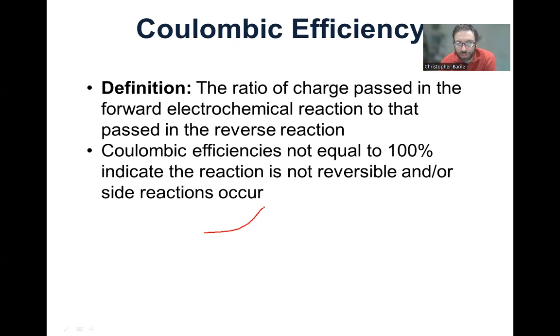If we think about our prototypical reaction of ferrocene going to ferrocenium, where we have a nice duck-shaped CV, if we were to look at how much ferrocene was converted to ferrocenium during this oxidation part of the wave, it should be, because this is a very reversible process, exactly equal to the amount of ferrocenium converted back to ferrocene.